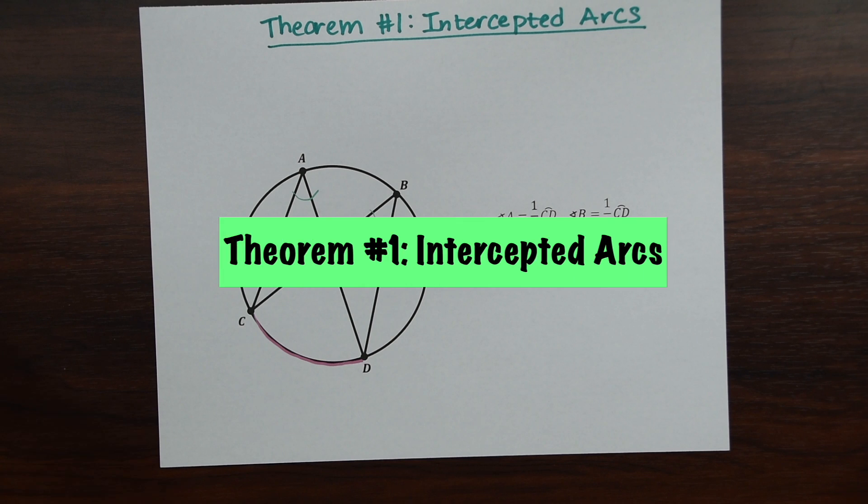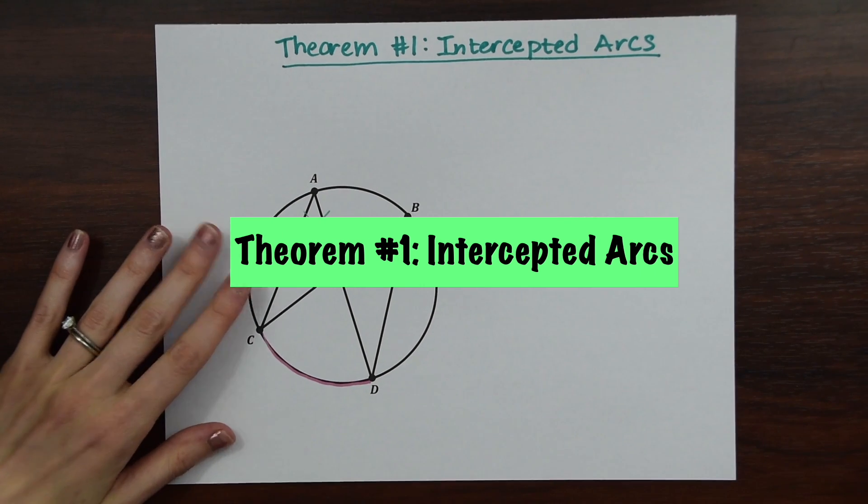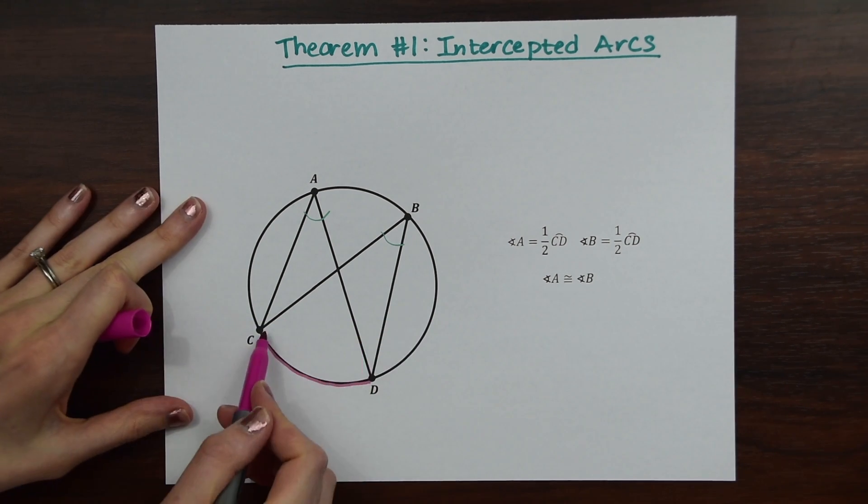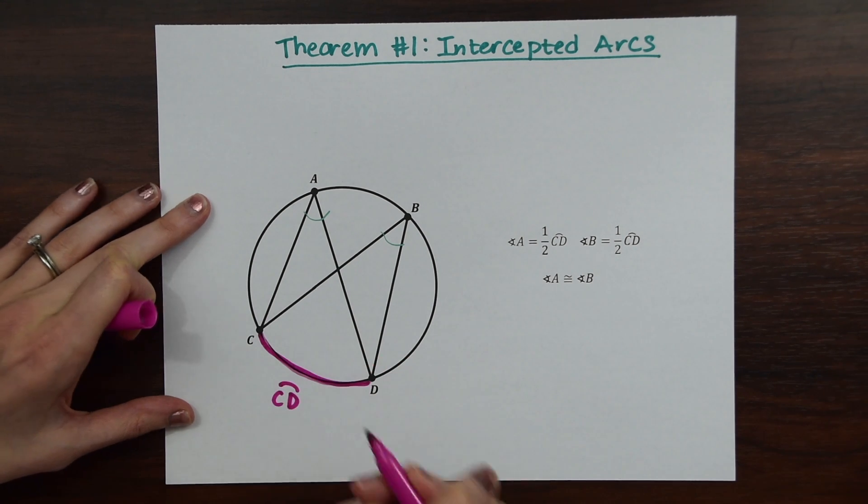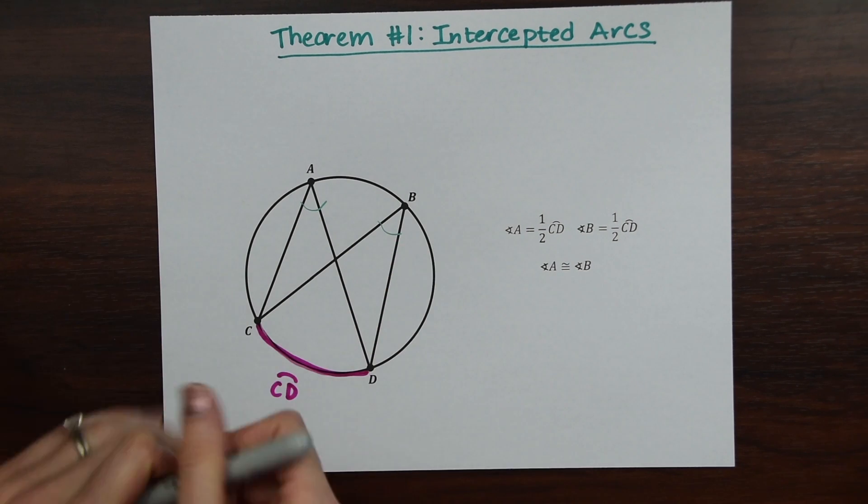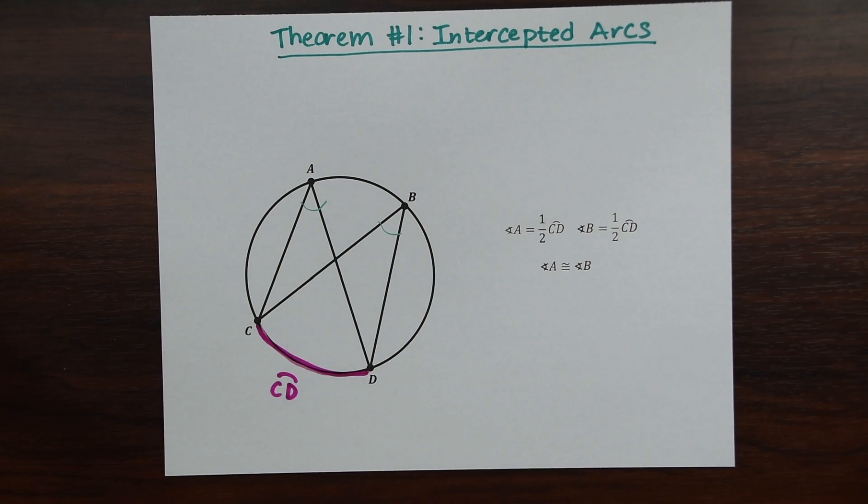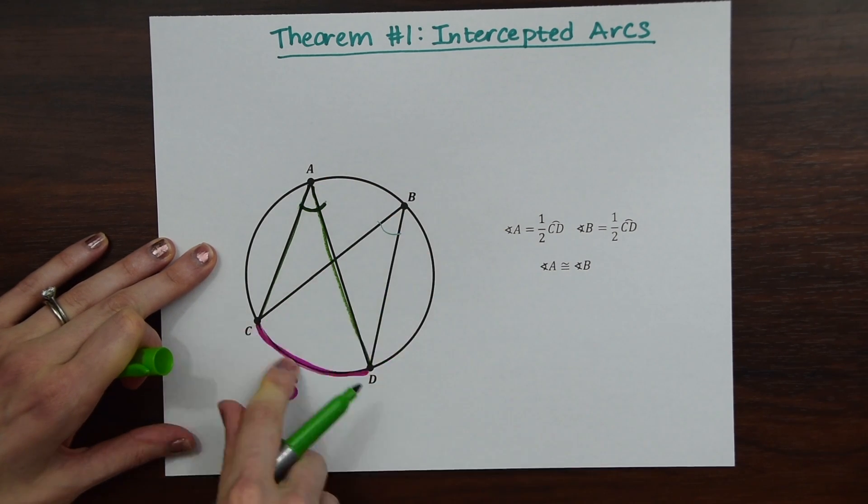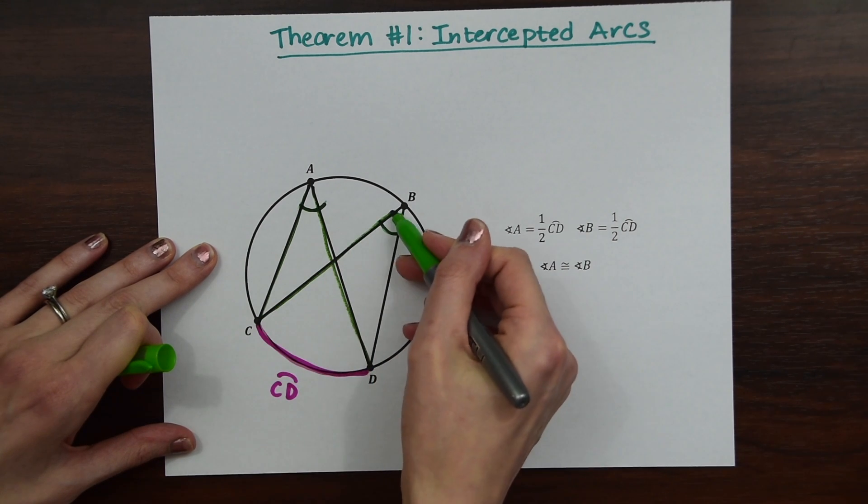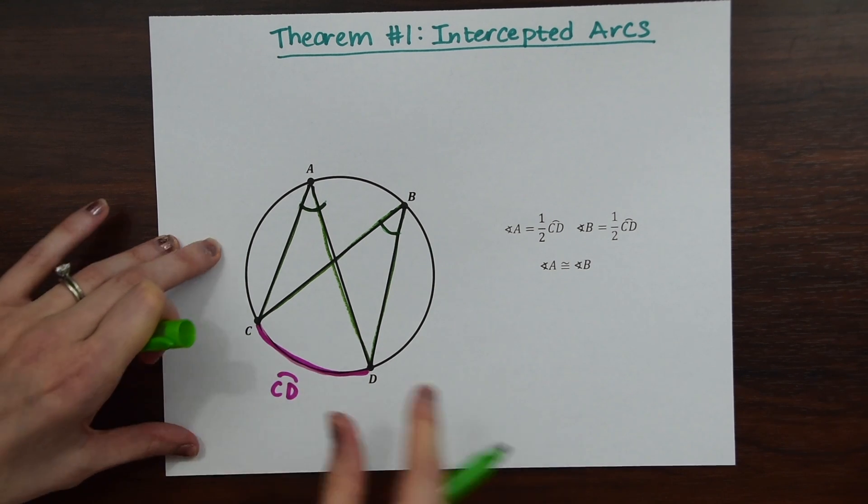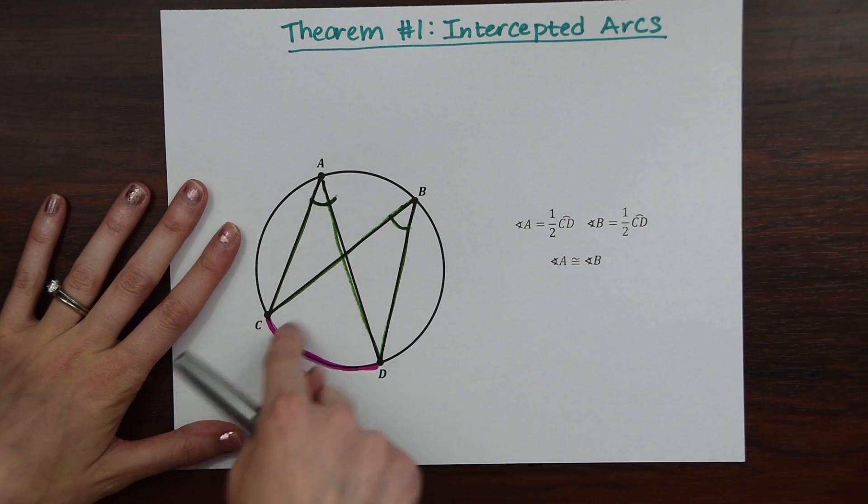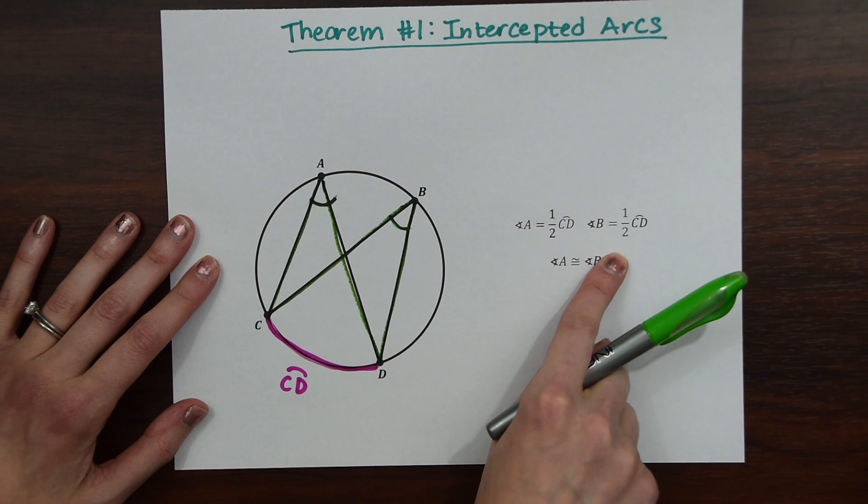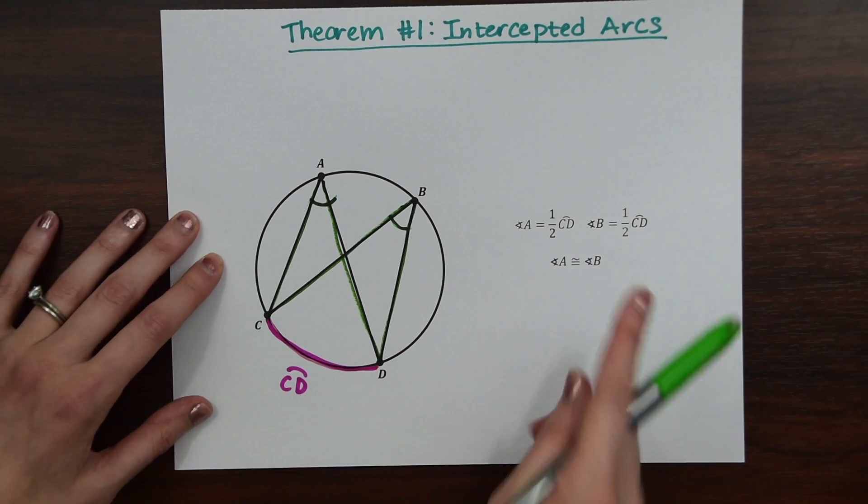So based on that rule, we can imply a couple of theorems. The first one we're going to go over is the intercepted arcs theorem. In a circle, when inscribed angles intercept the same arc, the angles are congruent. So notice we have this arc here, arc CD, and notice we have two angles intercepting from this point. We have angle A, see how it aligns with arc CD, and then we also have angle B, which also aligns with arc CD. So all we're saying with this theorem is that these angles are going to be equal to each other because they're intercepting the same exact arc. We know that angle A equals half of arc CD, and angle B equals half of arc CD. Therefore, they're equal to each other.